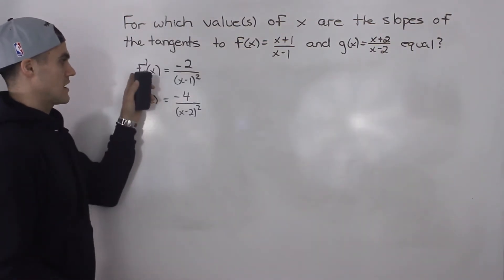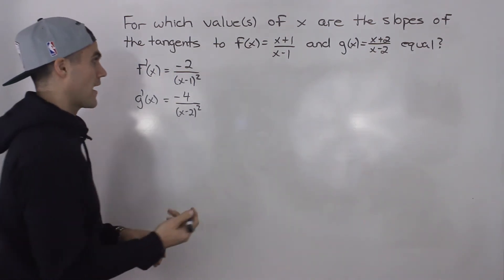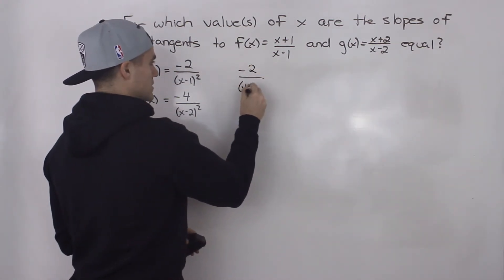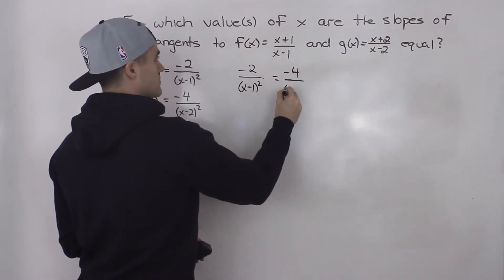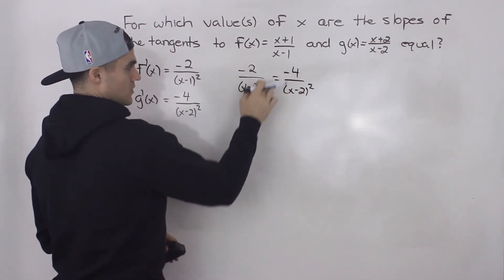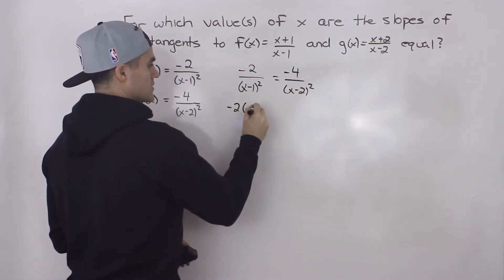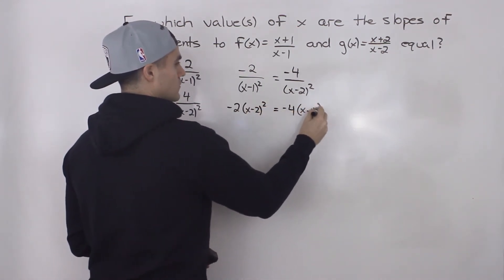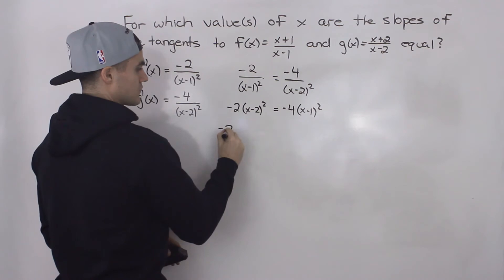Now we have the two derivatives for f(x) and g(x). All we have to do is set them equal and solve for x. So we have negative 2 over (x-1) squared equals negative 4 over (x-2) squared. To solve for x, we cross multiply: negative 2 times (x-2) squared equals negative 4 times (x-1) squared.